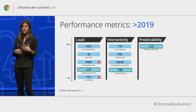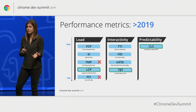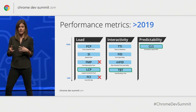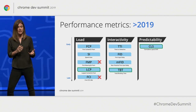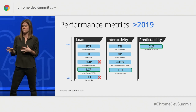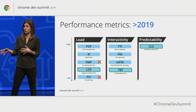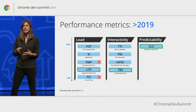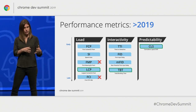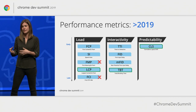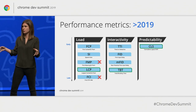For instance, when time to interactive does a good job of identifying when the main thread calms down later in load, total blocking time aims to quantify how strained the main thread is throughout the load.